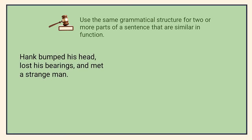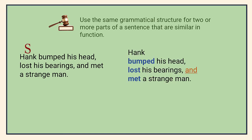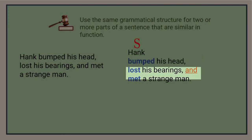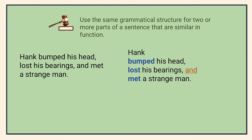Let's look at some examples to clarify this concept. Hank is the subject and he completed three actions. If we break it down this way, we see that he bumped his head, lost his bearings, and met a strange man. The three compound verbs follow the same pattern: action verb, adjective, and direct object. They are parallel.